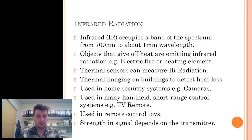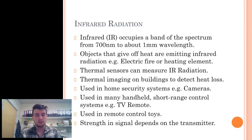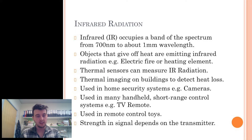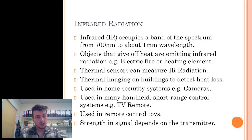Beyond the visible spectrum in the opposite direction, we move from red into a longer wavelength of infrared light. Infrared, or IR, occupies a band of the spectrum from 700 nm to about 1 mm wavelength. Objects that give off heat emit infrared radiation. Humans emit IR radiation, with the exception of cold-blooded animals such as insects and reptiles, which do not. Our eyes cannot see infrared radiation, but we can use equipment to measure it and display its intensity.